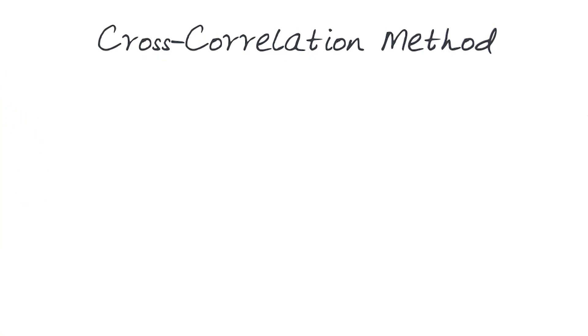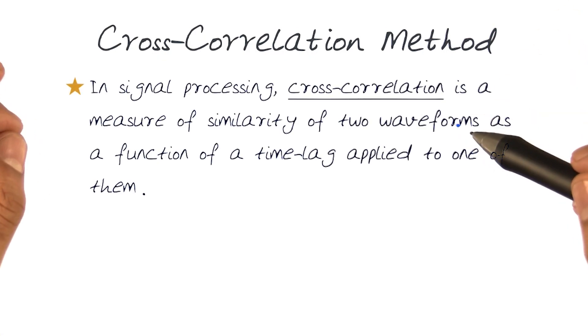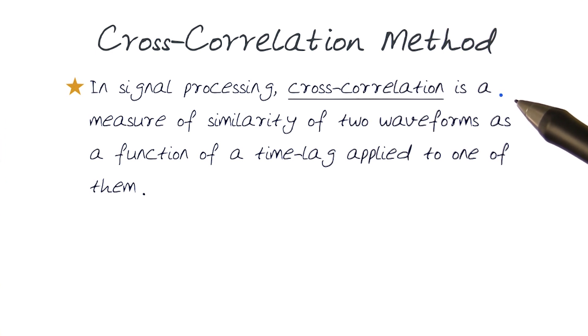So what do I mean by the cross correlation method? In signal processing, cross correlation is a measure of similarity of two different waveforms as a function of the time lag applied to one of them.